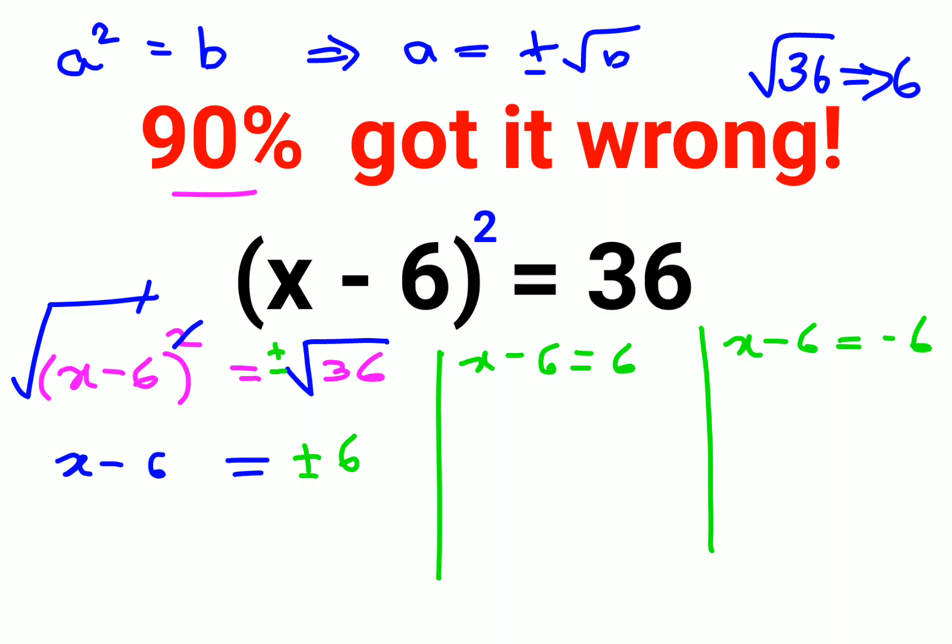So now in order to find the value of X, we will have to shift this 6 on the other side. So negative 6 on the other side gets you positive 6. So value of X comes out to be 12. And here negative 6 when shifted on another side gets you plus 6. So minus 6 plus 6 gets you 0.